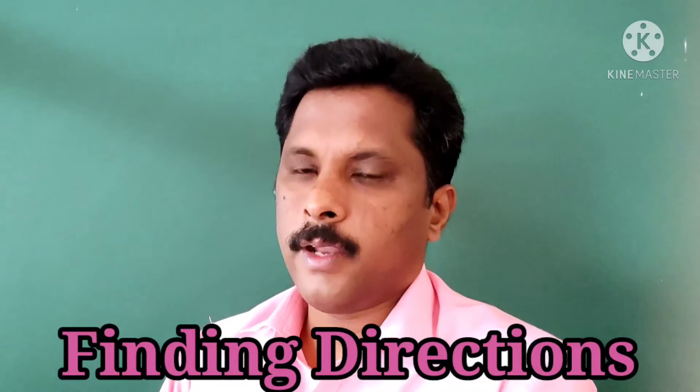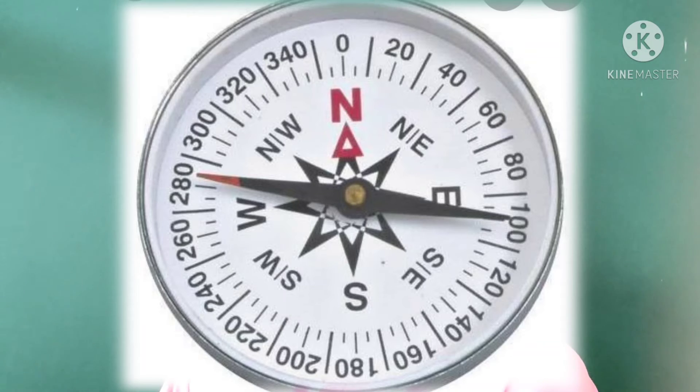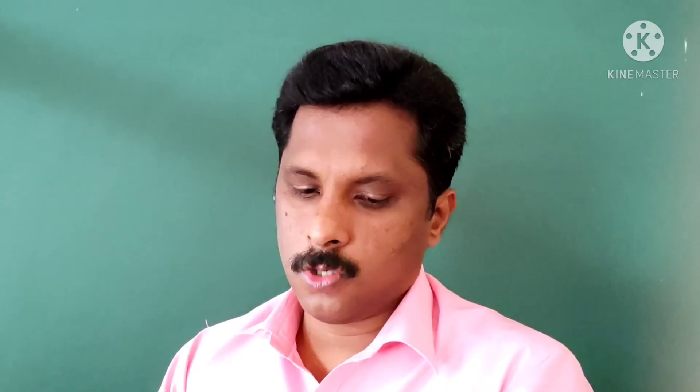Now let us study how we can find out directions. The most important way is by using a magnetic compass. The needle of the compass always points towards north and south, and from this we are able to find out the other directions as well. A magnetic compass has a magnetic needle which is balanced at its center on a pivot, enabling the needle to swing freely on a dial.